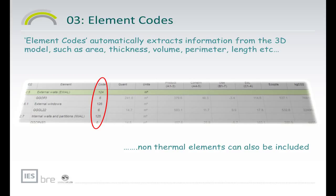One of the key benefits of carrying out this analysis within the virtual environment and IMPACT is the ability to automatically extract information from your 3D model. Rather than having to find quantities by quantities takeoff or by a bill of quantities, you're able to attach an element code and extract automatically the rate from the model. For example, if you wanted to know the surface area of your external walls, you'd select code 124 and that would bring in the surface area automatically from your 3D model, helping to save time and produce much more accurate results.